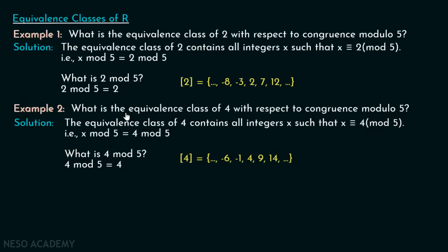Example 2: what is the equivalence class of 4 with respect to congruence modulo 5? The equivalence class of 4 contains all integers x such that x is congruent to 4 mod 5, meaning x mod 5 must equal 4 mod 5, which is 4. So 4 must be included, along with 9, 14, and so on. We can also include minus 1 and minus 6. This is again an infinite list, and this is the equivalence class of element 4.